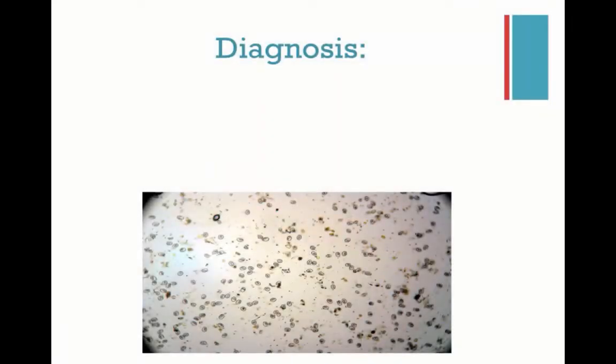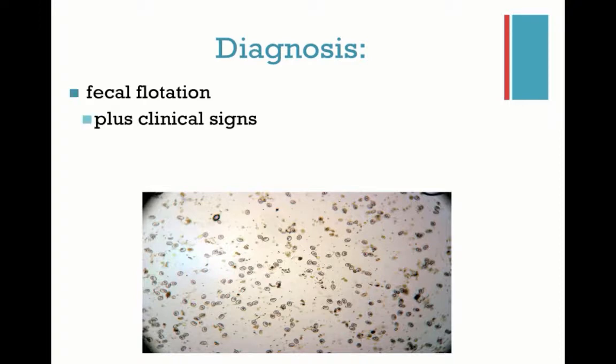So how do we diagnose this? Fecal — perfect. We need to make sure that we do a fecal float plus clinical signs. If we have an animal who has other clinical signs and we do a fecal float on it and find coccidia, it might not be the cause of their disease. So you need to make sure you take into account the whole clinical picture.